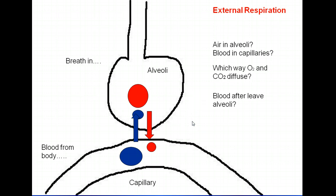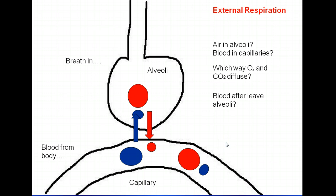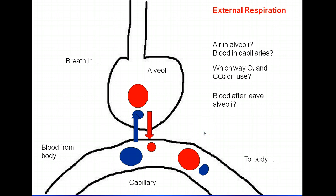So what will the blood look like after it passes this area of the alveoli? It will have a high concentration of oxygen and a low concentration of CO2 because of this process of diffusion that occurred at the alveoli. That oxygen-rich blood will then travel to the left side of the heart first, and then it will be pumped out to the body.